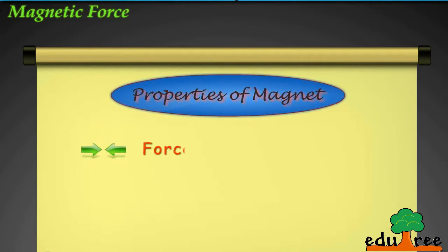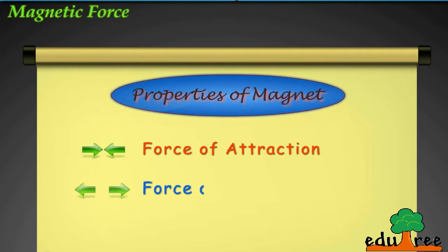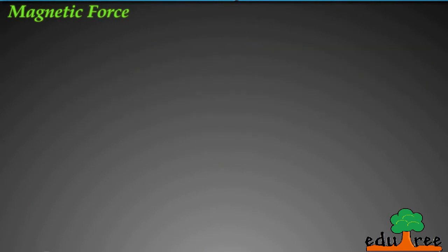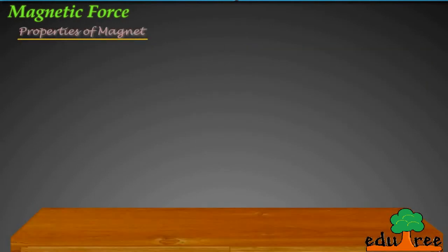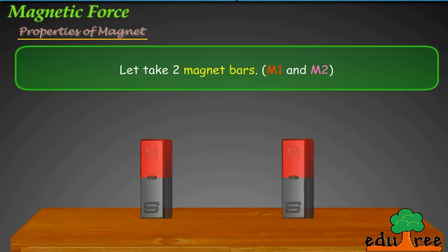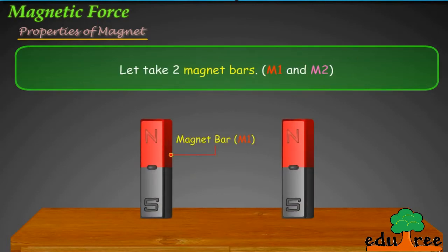The properties of a magnet include the force of attraction and the force of repulsion. Let's take two magnet bars, M1 and M2.